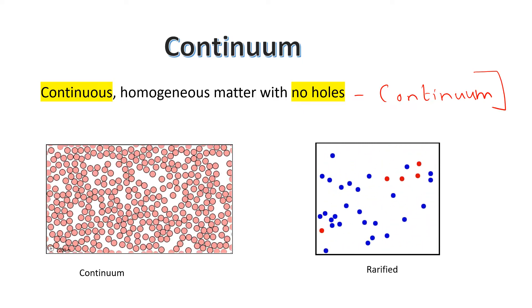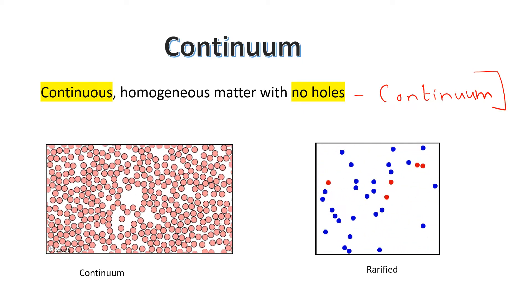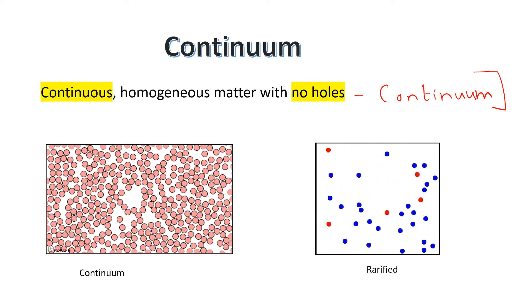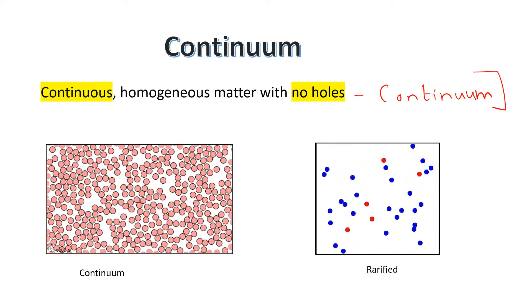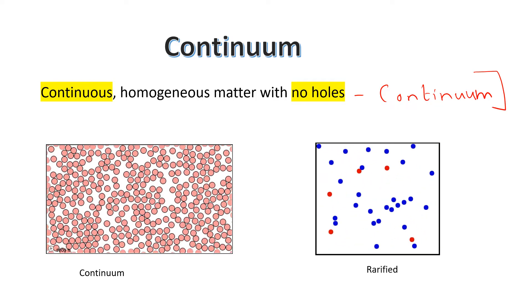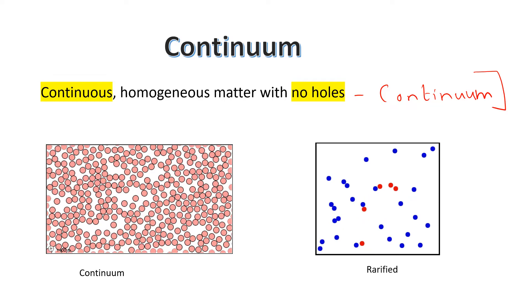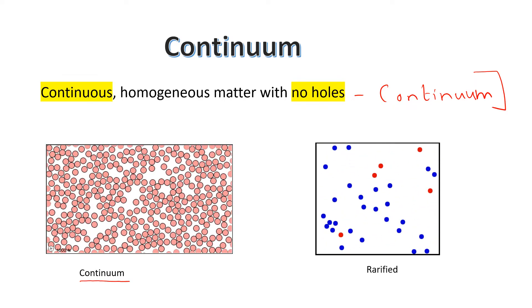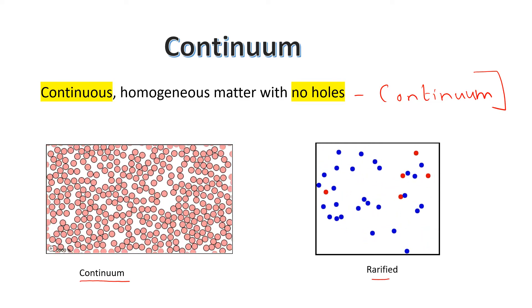The continuum idealization allows us to treat properties as point functions and to assume that the properties vary continually in space with no jump discontinuities. Here you can see the left side figure that is a continuum idealization and the right side you can see the rarefied gas.